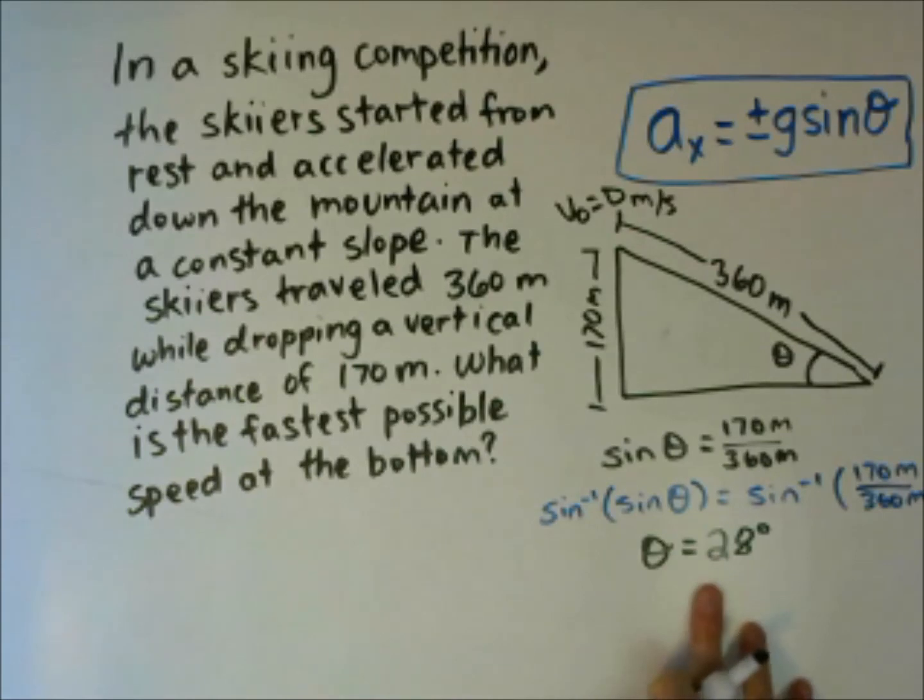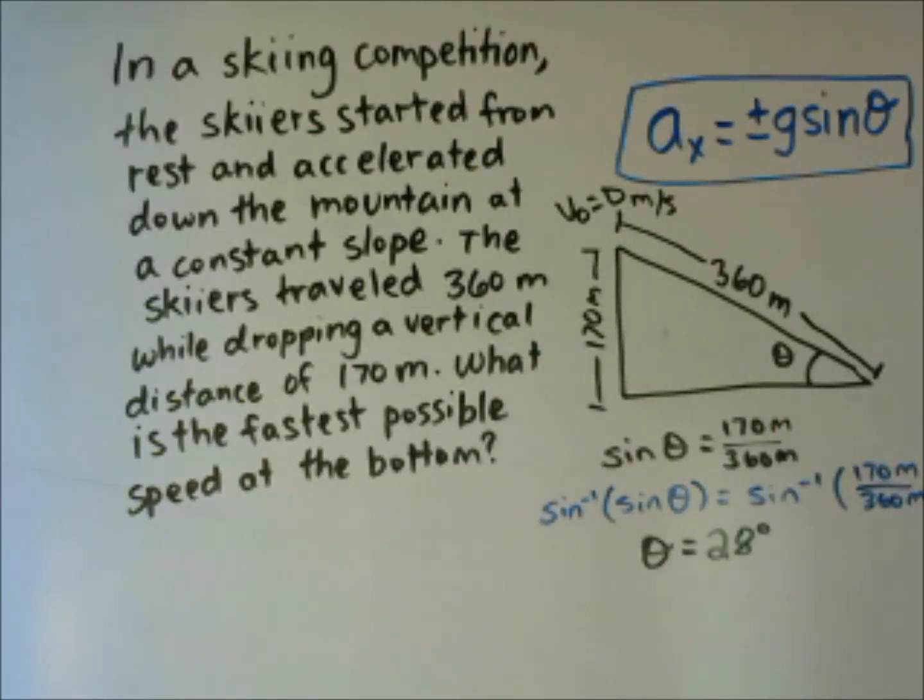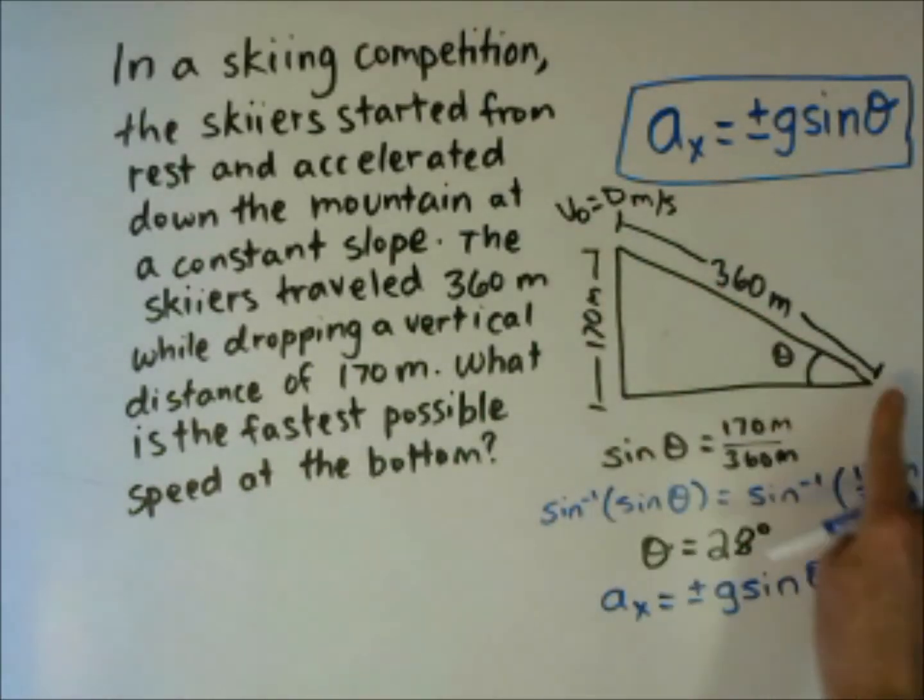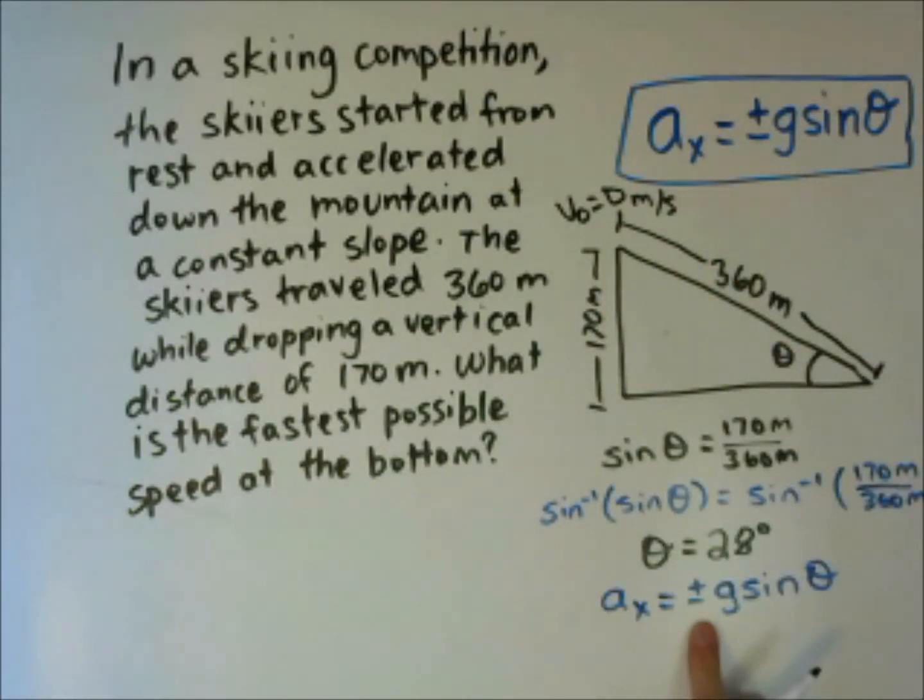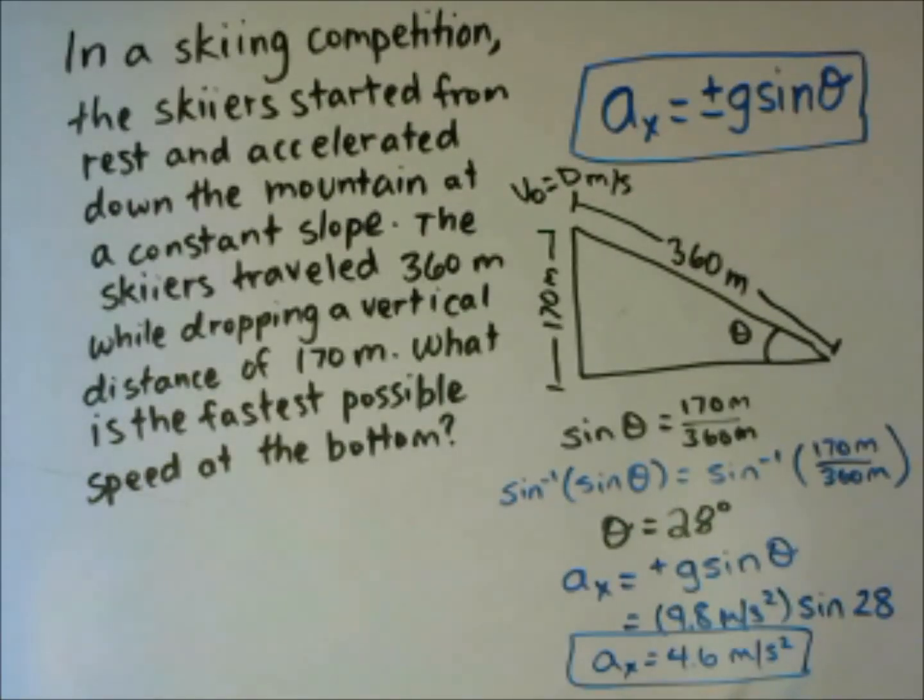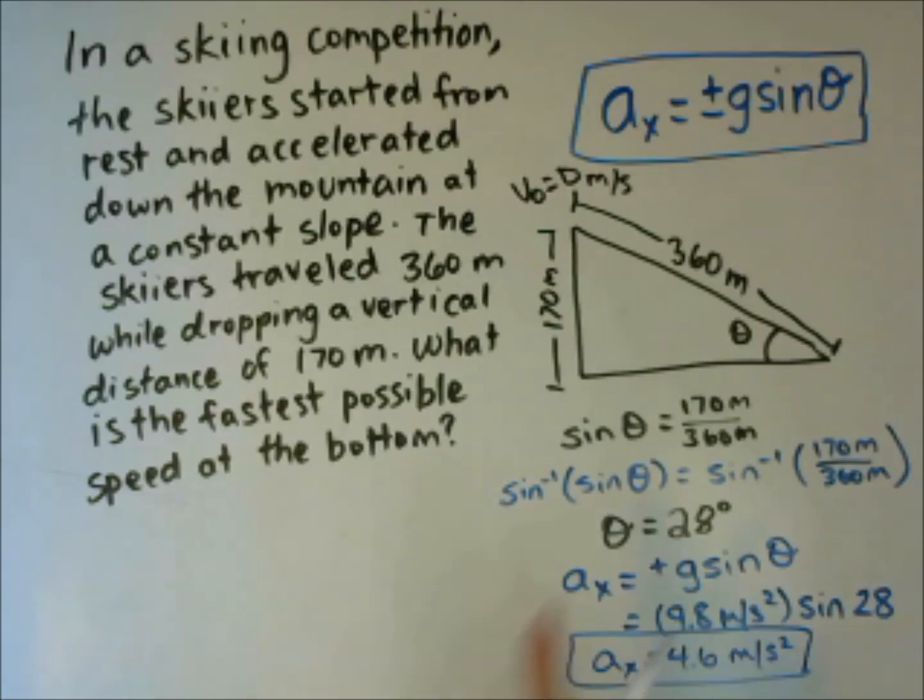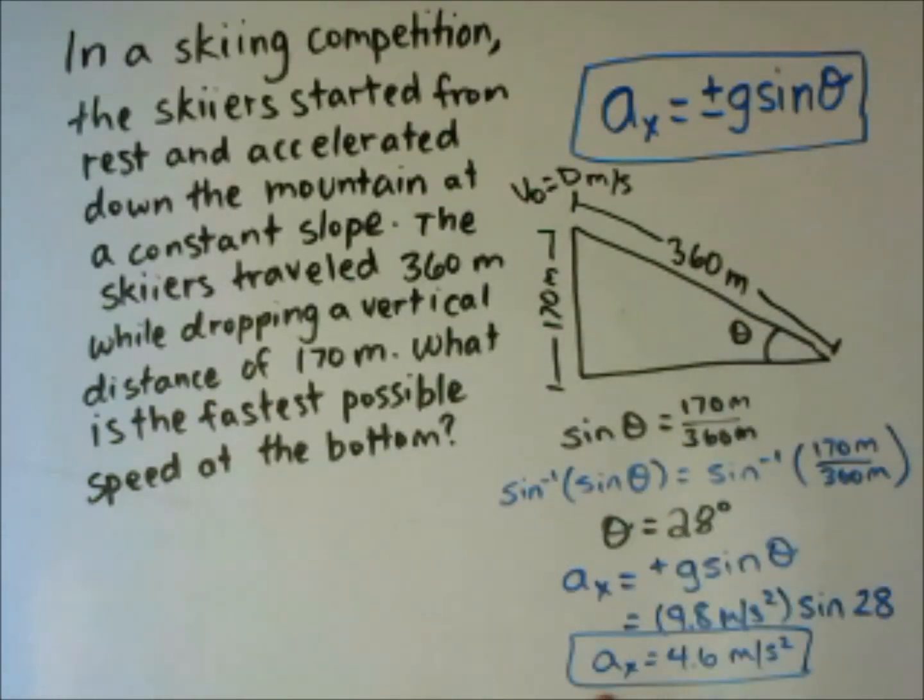Once you have your theta, you can find your acceleration in the x-direction. Since we are going to be accelerating down the incline in the positive direction, our acceleration is going to be a positive g sine theta. We get our acceleration in the x-direction as 4.6 meters per second squared. That's reasonable. We know it should be between 0 and 9.8 and it should be positive.